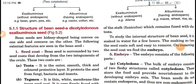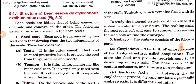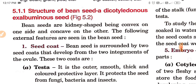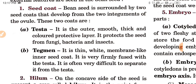Now we discuss the structure of a bean seed, which is a dicotyledonous ex-albuminous seed. Bean seeds are kidney-shaped, convex on one side and concave on the other. The bean is surrounded by two seed coats that develop from the integuments of the ovule. The testa is the outer smooth, thick, and colored protective layer that protects the seed from fungi, bacteria, and insects. The tegmen is a thin white membrane-like inner seed coat, very firmly fused with the testa.